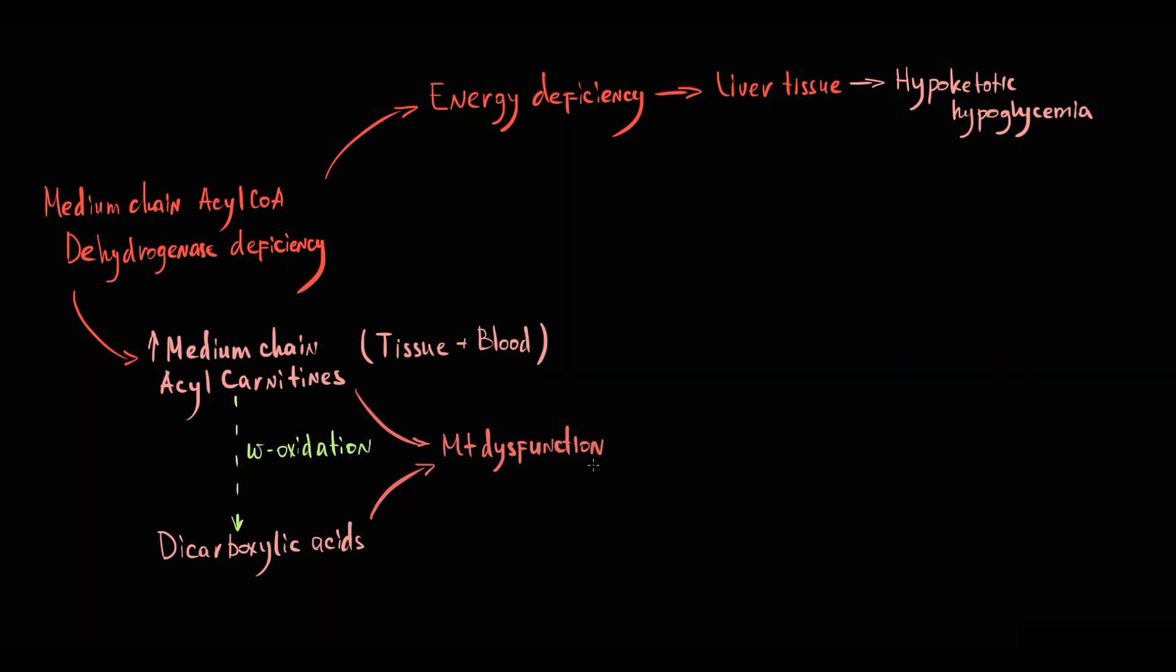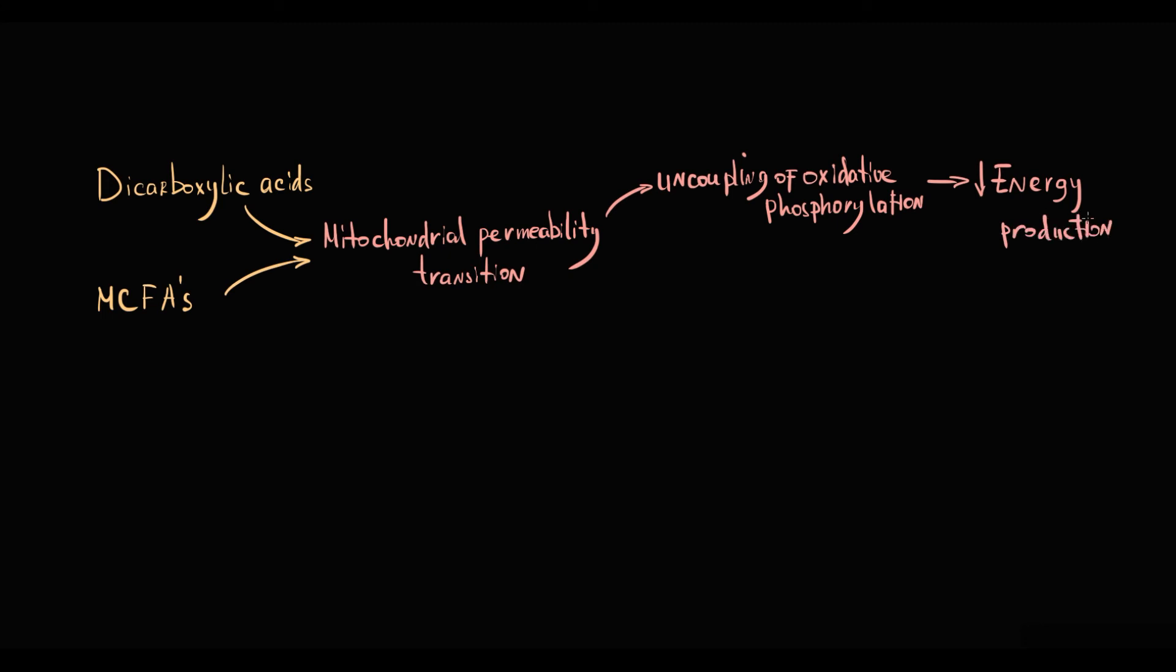The concept here is that accumulated in mitochondrial matrix dicarboxylic acid and medium-chain fatty acids induce mitochondrial permeability transition that results in uncoupling of oxidative phosphorylation that results in decreasing energy production and also MPT induce severe oxidative stress.